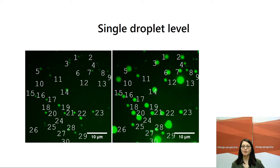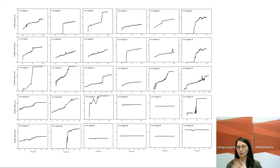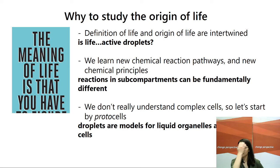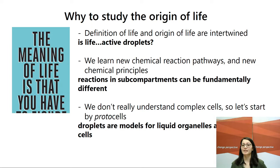In the lab, we prepare all these droplets. I'm currently working with imaging a population of droplets and following them over time — they display all kinds of behaviors: some grow, some fuse, some don't do anything. I'm trying to understand how the reaction forming ATP connects to these droplets and to the way they behave, and I want to obtain more than just growth — more interesting behavior. Going back to the first story: by studying those droplets, maybe life can be just active droplets. We have learned that reactions in sub-compartments can be fundamentally different, and that droplets are models for liquid organelles and for primitive cells.